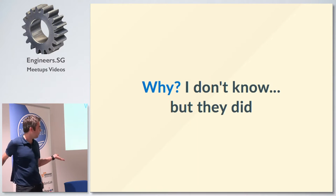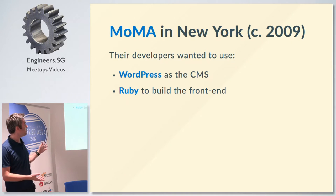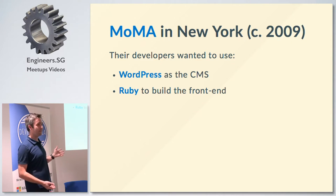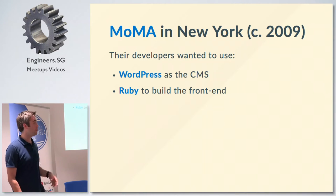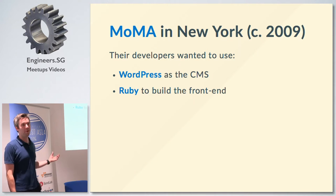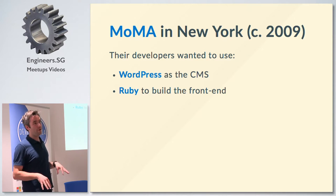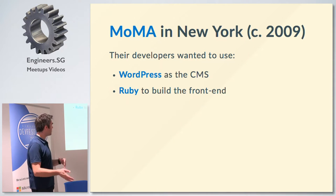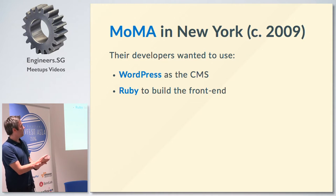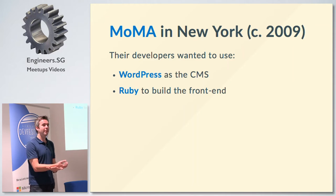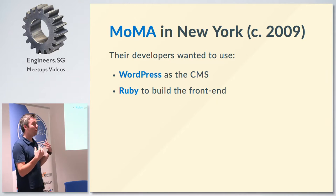They were thinking: how can we mix these two things together? Probably the most compelling reason is that their staff and journalists already understood WordPress — there's no real equivalent of WordPress in the Ruby sphere. So if you want something your staff already know, you use WordPress, but your developers use Ruby.